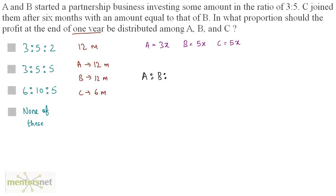We can calculate the ratio of their profits. A is to B is to C equals the amount invested by A which is 3x times the time period which is 12, is to B which is 5x times 12, is to C which is 5x times 6. Dividing the complete ratio by x and then by 6, what remains is 3 times 2 which is 6, 5 times 2 is 10, and 5. The ratio of the profits of A, B and C at the end of one year will be 6 is to 10 is to 5.